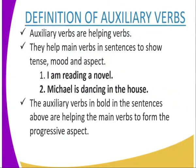We begin with the definition of auxiliary verbs. Auxiliary verbs are helping verbs — they help the main verb in sentences to show tense, mood, and aspect. For example, 'I'm reading a novel' shows tense, which is the present tense. 'My calf is dancing in the house' — the auxiliary verb is helping the main verb to form the progressive aspect, meaning the action is ongoing.